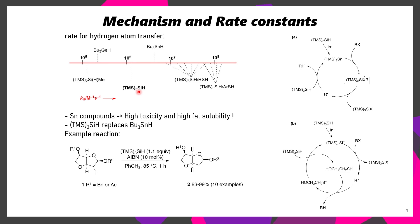This isn't the only reagent that can be used in place of tributyltin hydride, but it's one possible reagent which is greener, milder, and safer to use. It's also possible to further enhance the reactivity of tris(trimethylsilyl)silane through the use of a thiol co-catalyst, which can improve the reactivity by one to two orders of magnitude. If you can get a 100-fold increase in reactivity through the use of a thiol, that's pretty awesome.